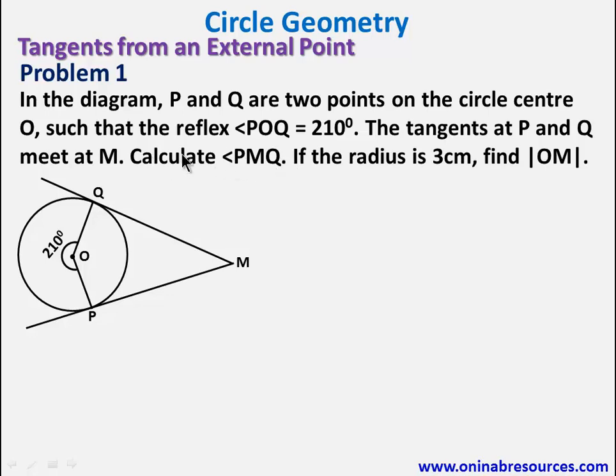So starting from calculating PMQ. If we can calculate this angle, we know this angle to be 90, this is 90, we'll be able to calculate this fourth angle. So the obtuse angle POQ is 360 degrees minus 210 degrees, which gives 150 degrees.